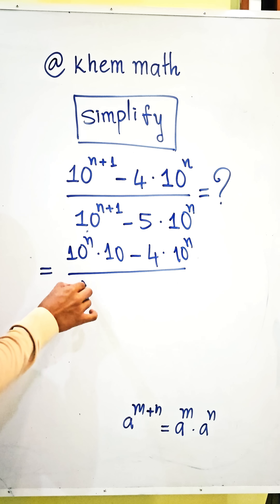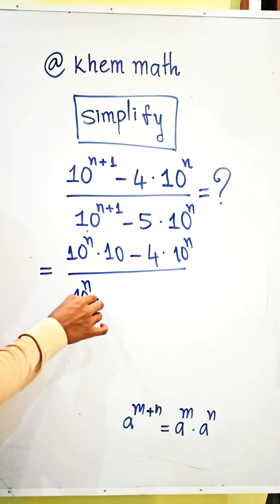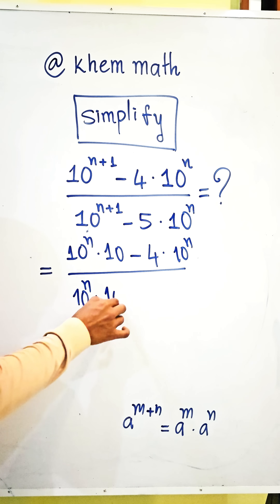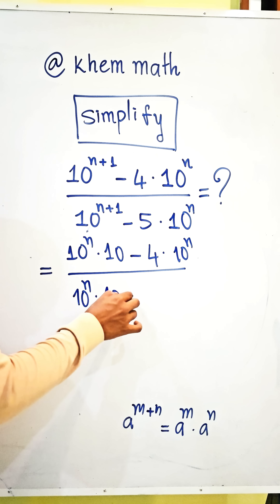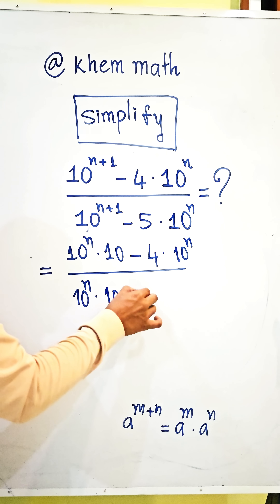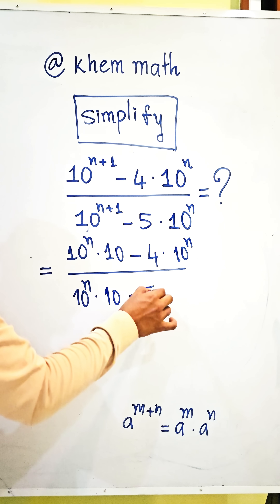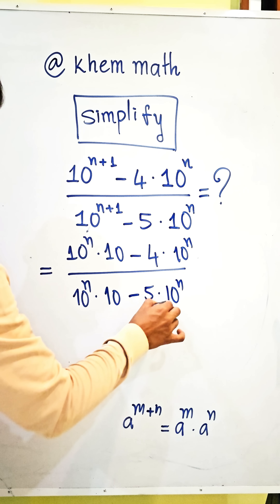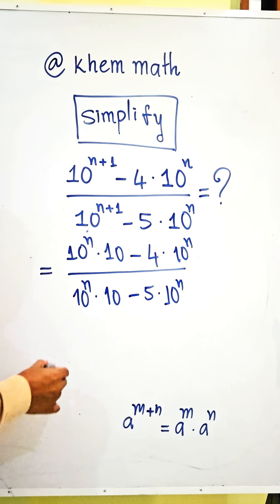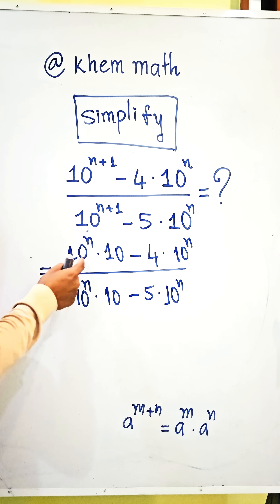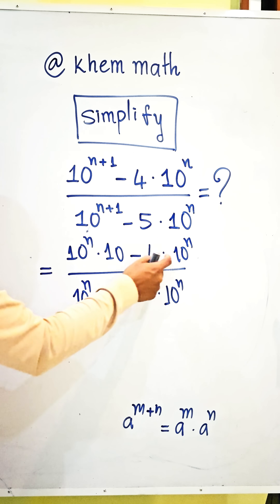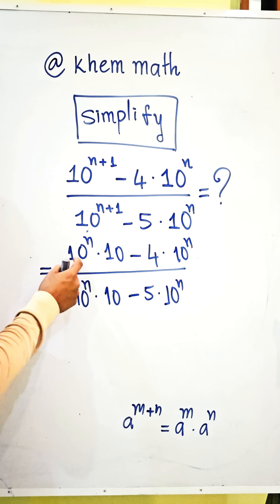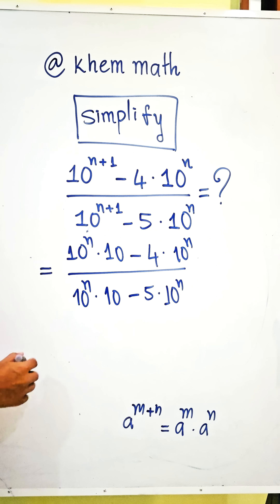In the denominator, we write 10 power n times 10 minus 5 times 10 power n. Now we take 10 power n as a common factor.